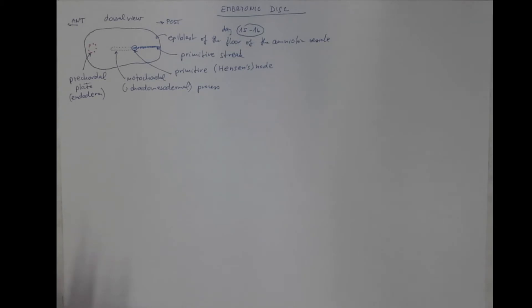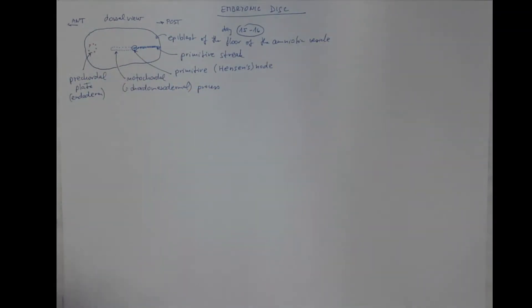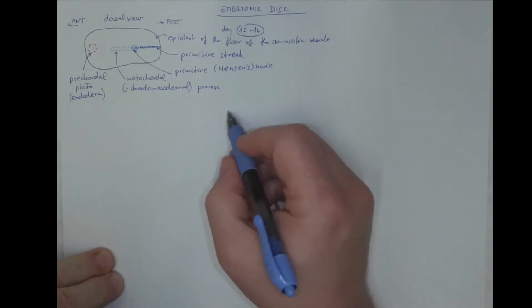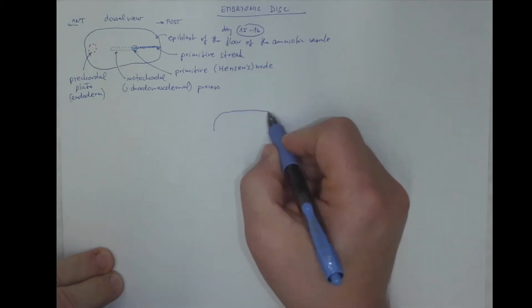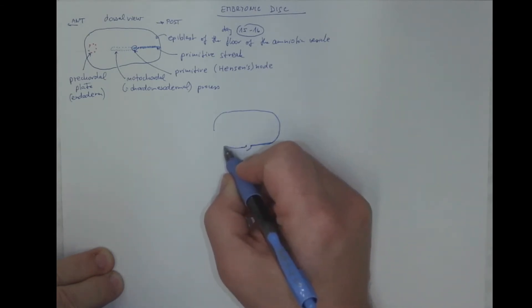Now, if we make a sagittal section through this, so here you make a section and look from the side, more things happen, let's say, a day or two later. That would be the amniotic vesicle, the bottom of which is thickened to form the primitive streak that ends with the primitive node, which projects into the notochordial process that grows anteriorly.